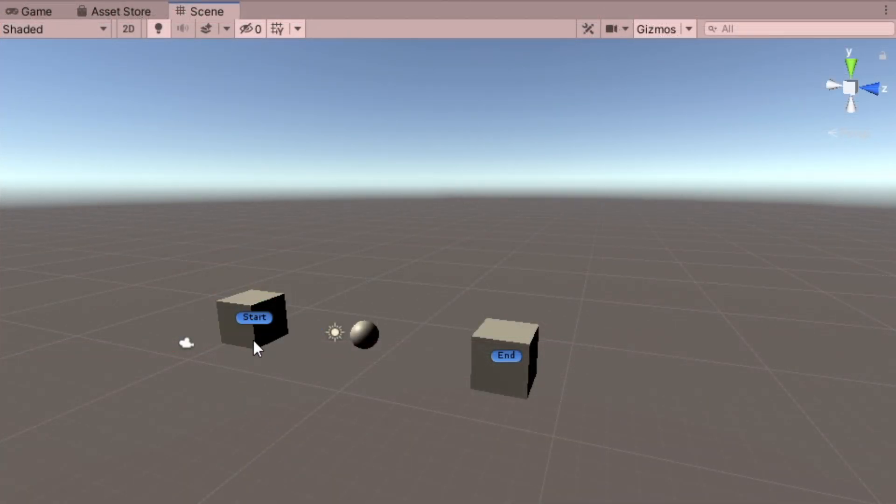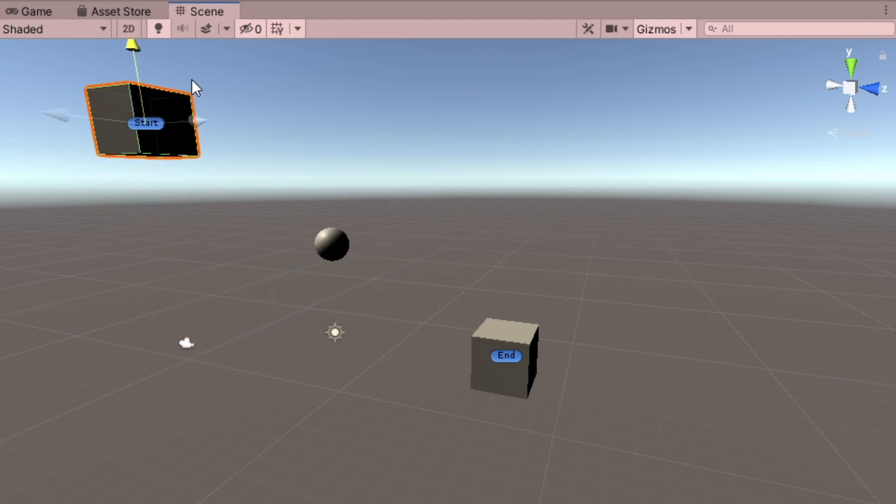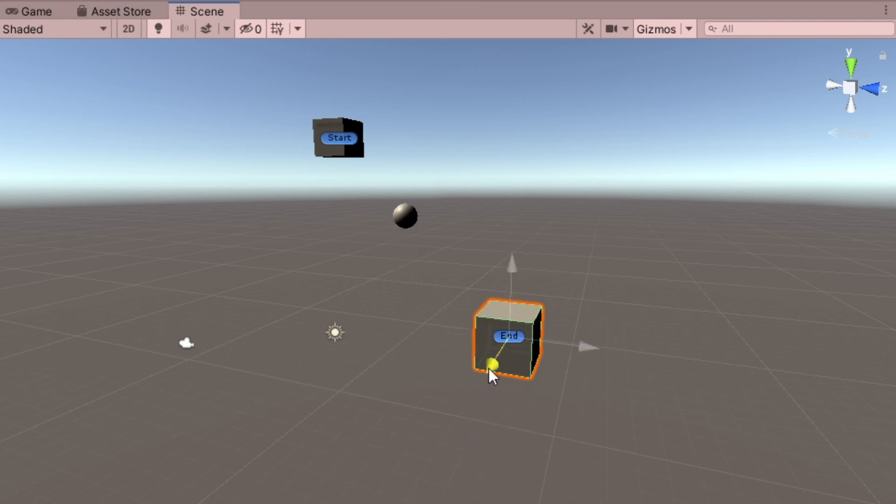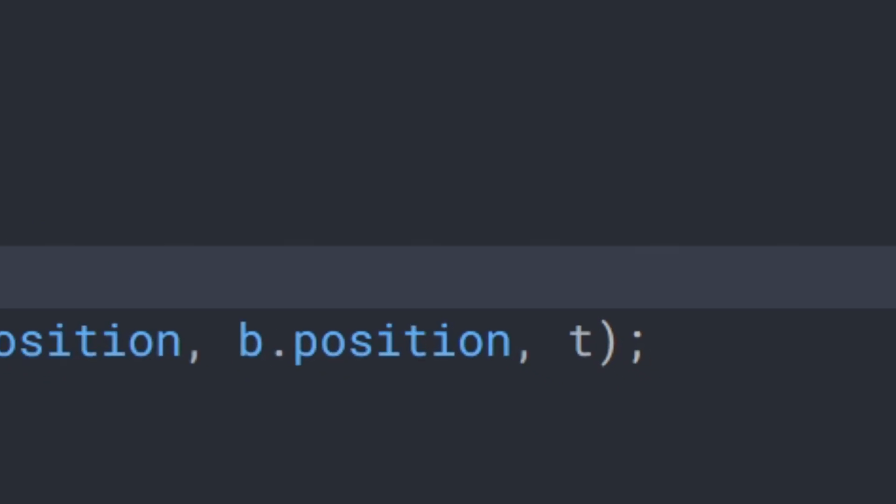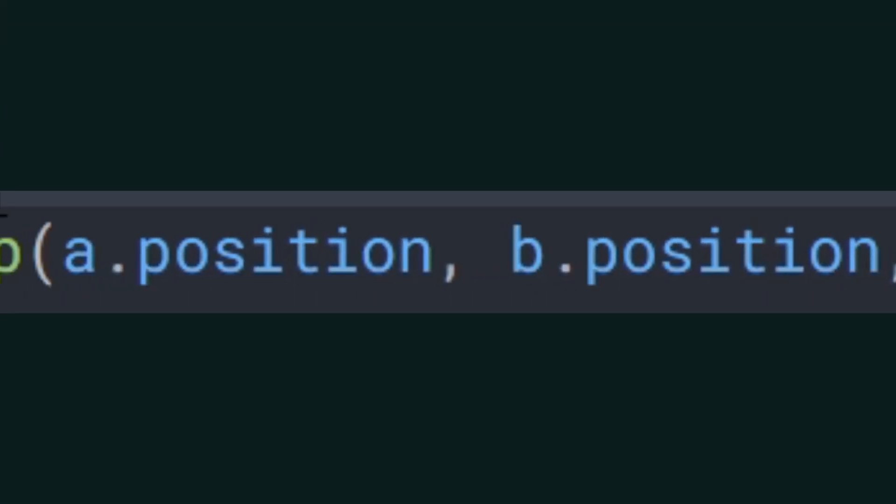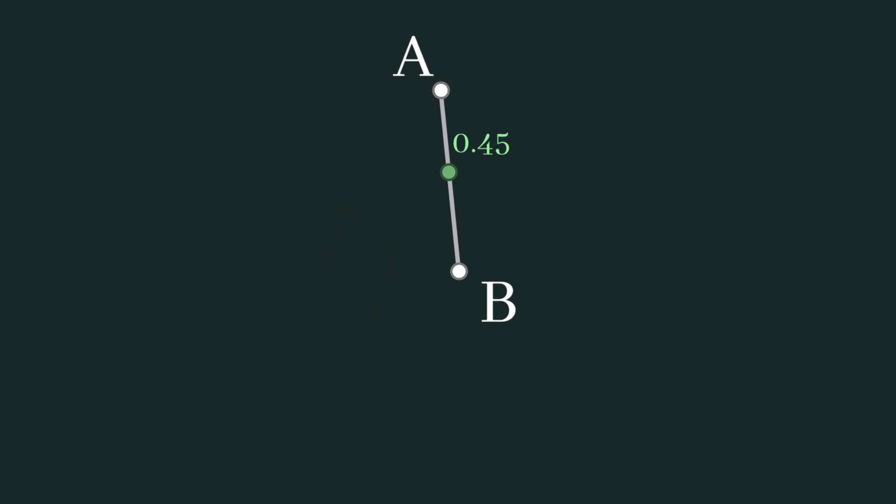Note that if we were to move either of the end points, the position of the sphere updates instantly, so that it's always in the correct position between the two points. This occurs since we're not only updating the percentage value every frame, but the position of the start and end points as well. Looking at this in our 2D example, we can see this more clearly by moving points A and B around the screen. The point between A and B will always remain in the correct position between them.